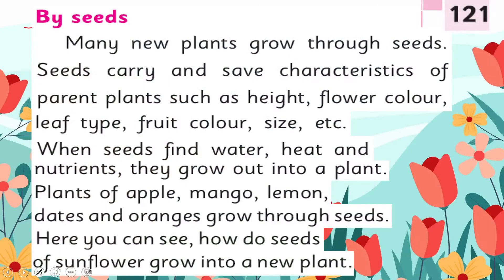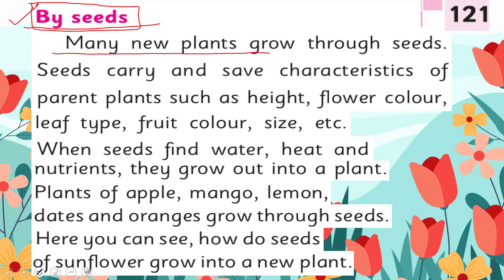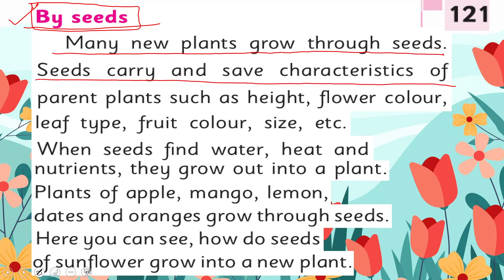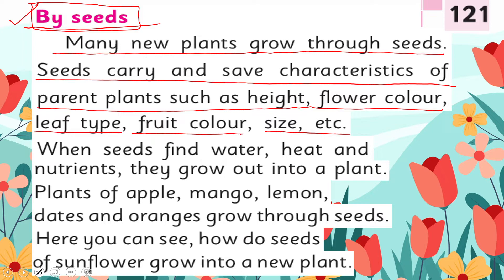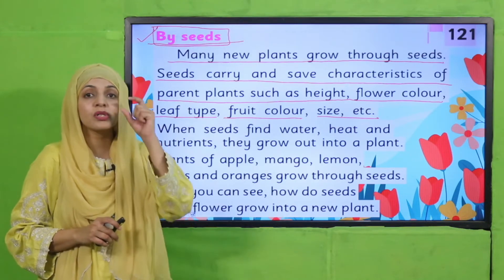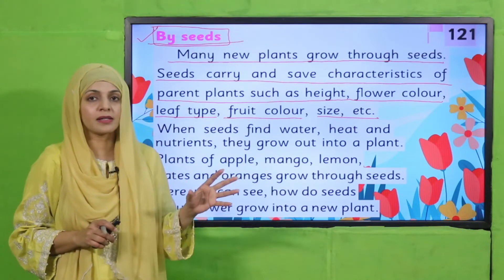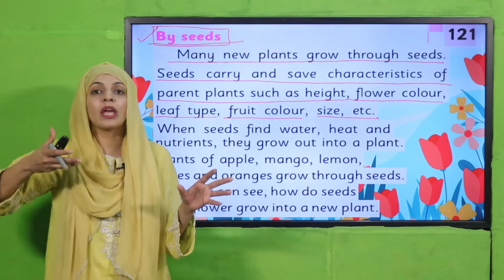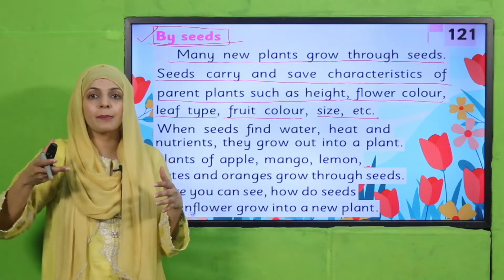Many new plants grow through seeds. Seeds carry and save the characteristics of parent plants, such as height, flower color, leaf type, fruit color, size, etc. A very important thing to understand is that in the seeds there are all the characteristics that are in the parent plant — for example, the apple tree.